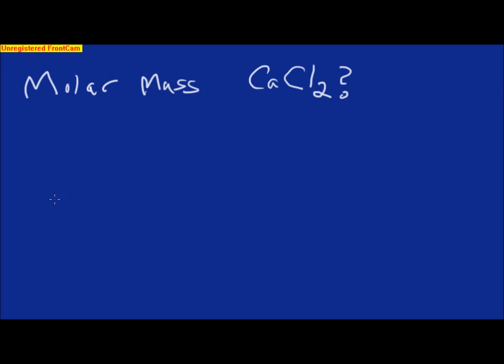What is the molecular mass of calcium chloride? So, we use the periodic table. I find out that calcium weighs 40.1 grams per mole, and chloride weighs 35.5 grams per mole.